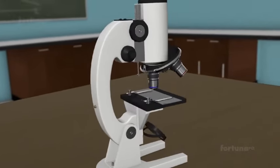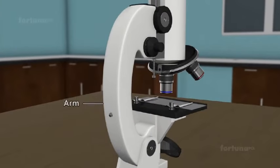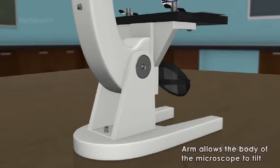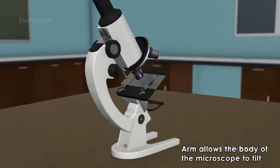The body tube is arranged on an arm which is connected to a strong base. This arm allows the body of the microscope to tilt.